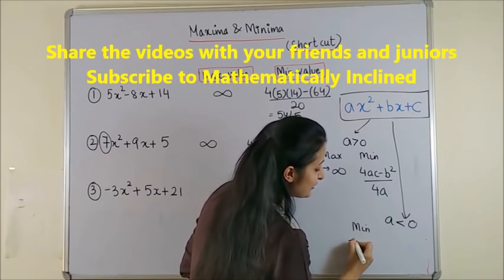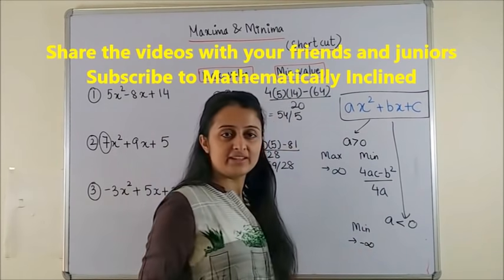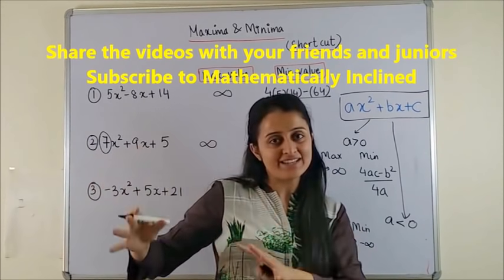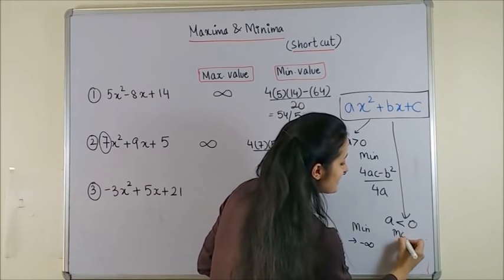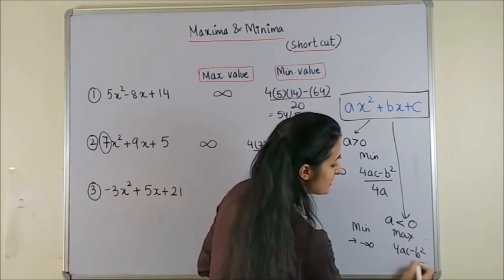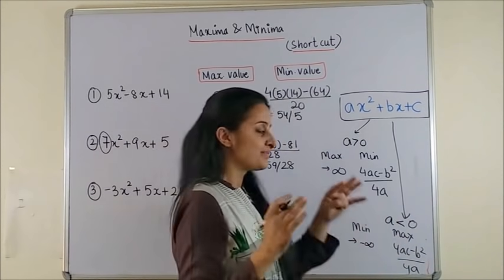Minimum value this time would tend towards minus infinity. Because lower you go, it keeps moving towards minus infinity. And for maximum, we apply the same formula 4AC minus B square upon 4A.